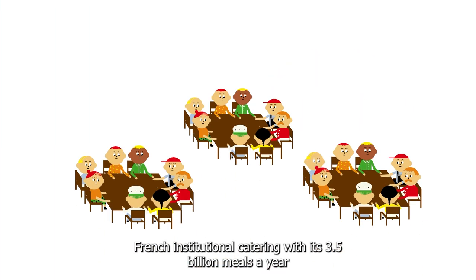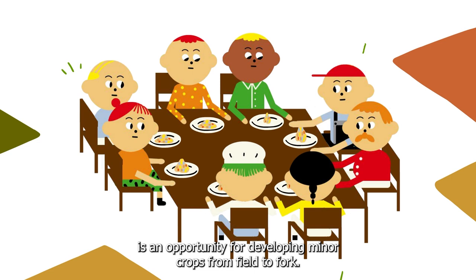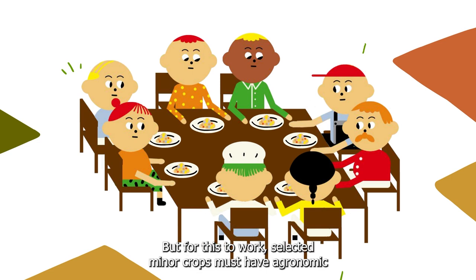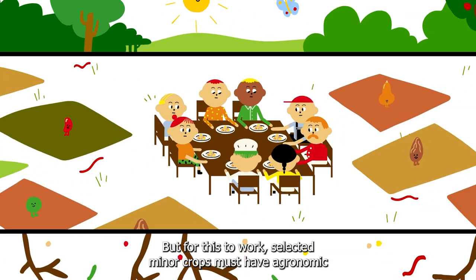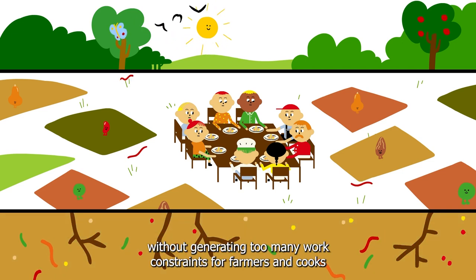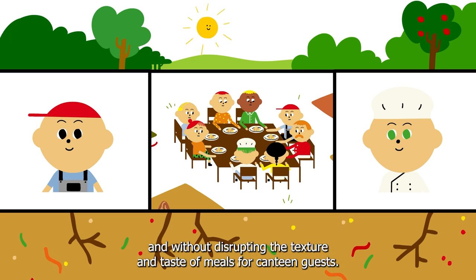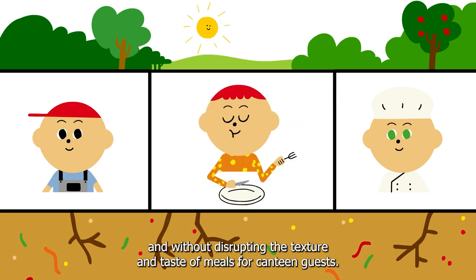French institutional catering, with its 3.5 billion meals a year, is an opportunity for developing minor crops from field to fork. But for this to work, selected minor crops must have agronomic and environmental benefits without generating too many work constraints for farmers and cooks and without disrupting the texture and taste of meals for canteen guests.